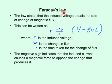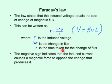Faraday's law states that the induced voltage V equals the rate of change of magnetic flux: delta phi over T. So V is the induced voltage, delta phi is the change in flux, and T is the time taken for the change of flux. The negative sign indicates that the induced current causes a magnetic force to oppose the change that produces it — that's Lenz's law. Note that this formula and the previous one express the same relationship in two different ways.